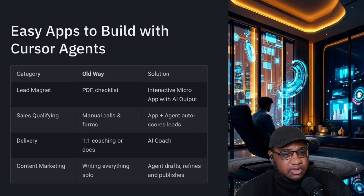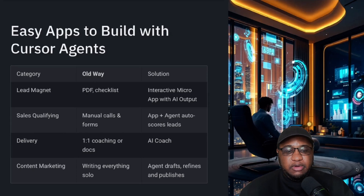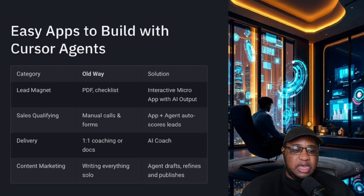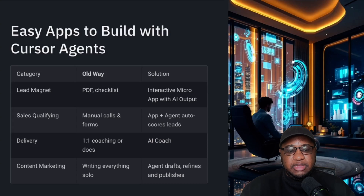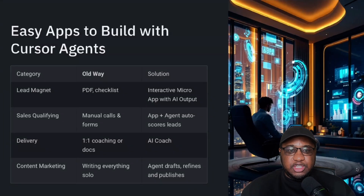Here are a couple of apps that work well. A lead magnet — every business has one, usually a PDF or checklist. You can build a micro app around it: take the lead magnet and turn it into an app with some type of quiz that someone goes through, and they get a little AI output that customizes the response for them. Sales qualifying is another one — the agent either calls someone or picks up a phone call, qualifies the person, and scores them based on how much of a fit they are for the business's actual offer.